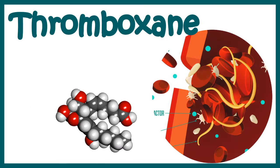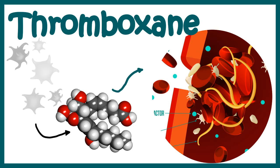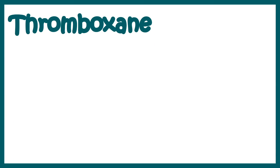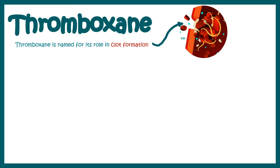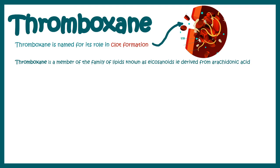In this video we'll talk about thromboxane. When you hear the term thromboxane, thrombosis or blood clotting comes to mind, and this is correct because thromboxane is named so because of its role in clot formation. Thromboxane is a member of the family of derived lipids, which are eicosanoid derivatives.